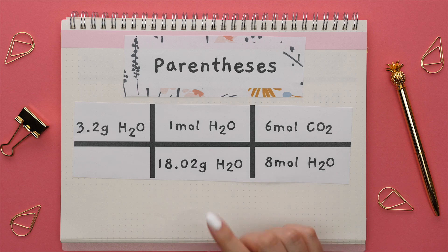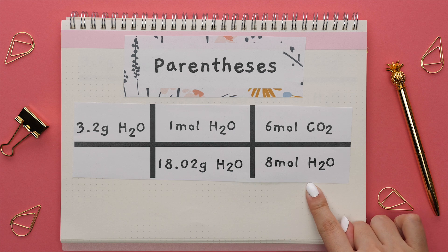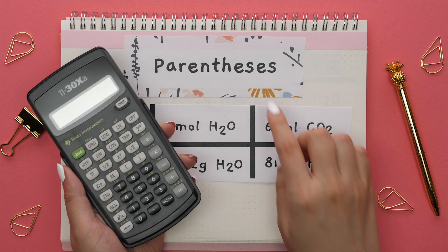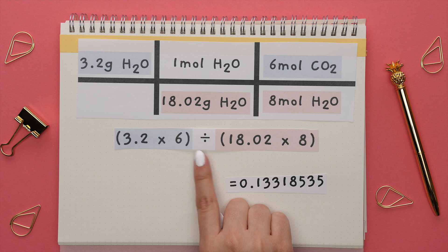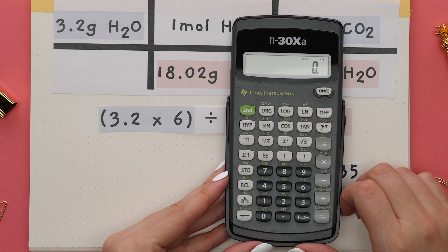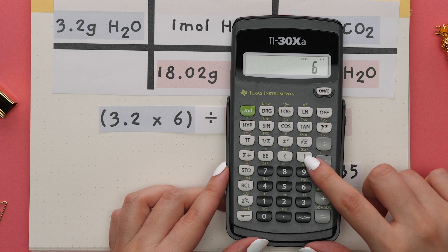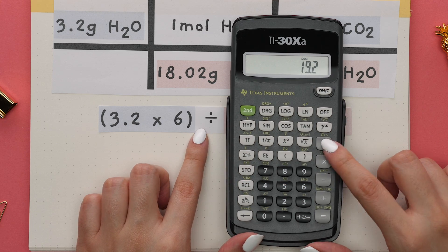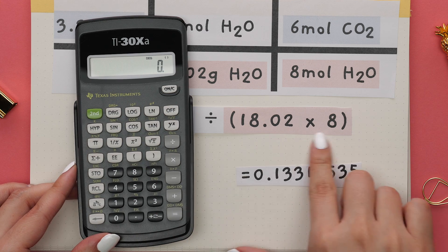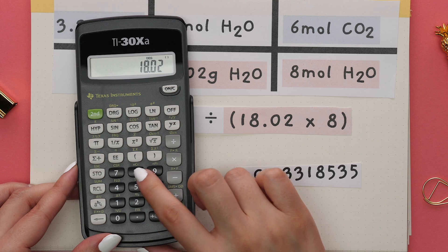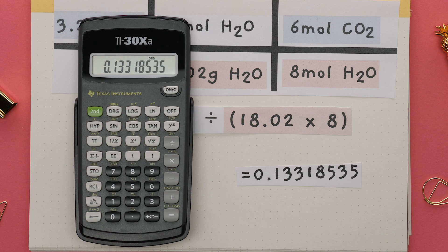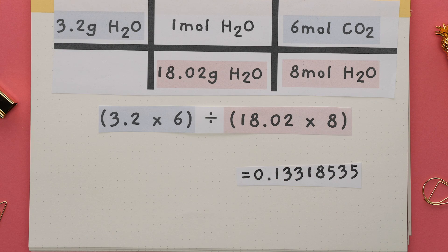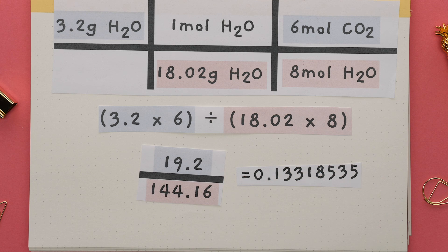Now for the most common calculator mistake. Let's say we're solving a stoichiometry problem and we set everything up right but forget to use parentheses — we could get the wrong answer. Here's how to properly enter it: we want to multiply the top and divide by what is being multiplied on the bottom. Press the open parentheses sign and enter the first part — 3.2 times 6 — then close parentheses. Press the division symbol, then open parentheses, enter 18.02 times 8, close parentheses, and hit equal or Enter. That's the correct answer. If you might forget this, I recommend multiplying the top and bottom separately, then dividing.